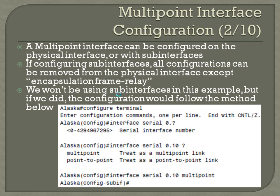We won't be using sub-interfaces in this example, but here's a quick look at how they'd be set up. In config t, you'd go to 'interface serial0.10' — you have options for a large number of logical sub-interfaces. In this case they chose sub-interface dot 10, so 'interface serial0.10 multipoint', and it drops you into sub-interface configuration mode.